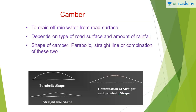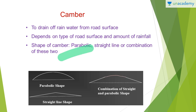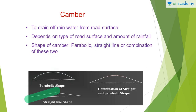Next, you have the camber. Cambers are basically provided to drain off rainwater from the road surface. This depends on the type of road surface and amount of rainfall — in places with heavy rainfall, you need to provide a higher slope so that water does not remain on the surface. The shape of camber can be parabolic, straight line, or a combination of the two.